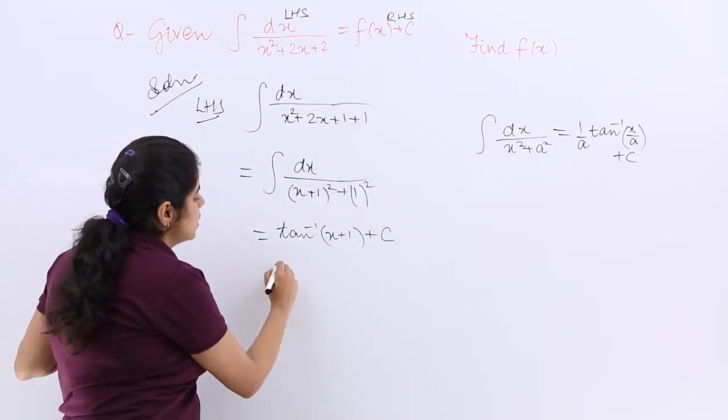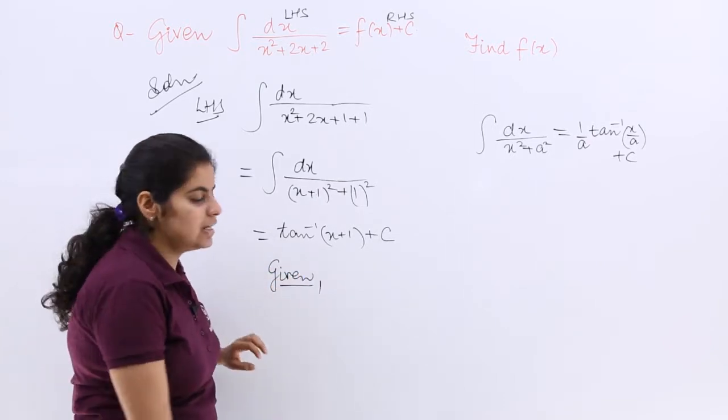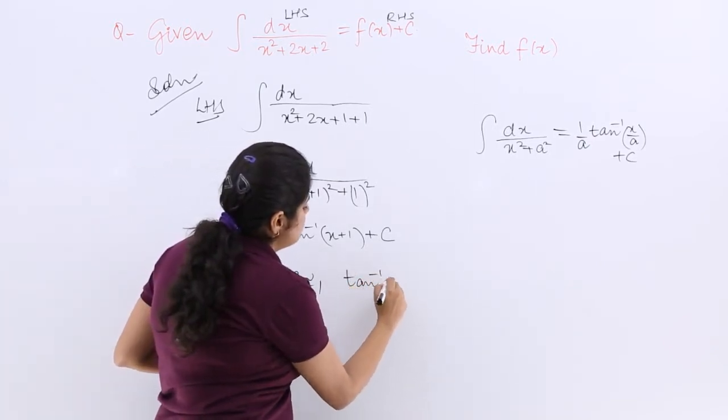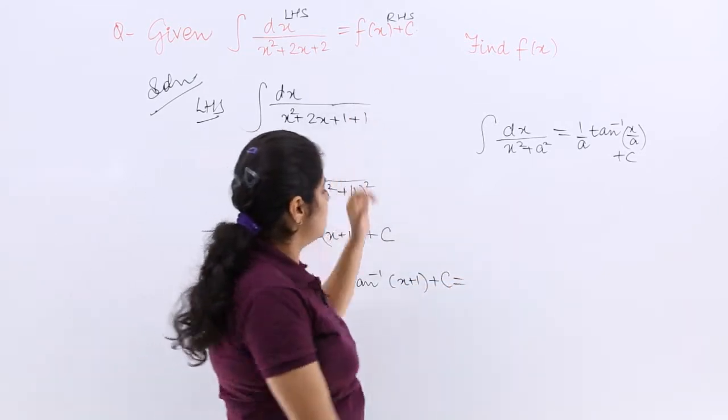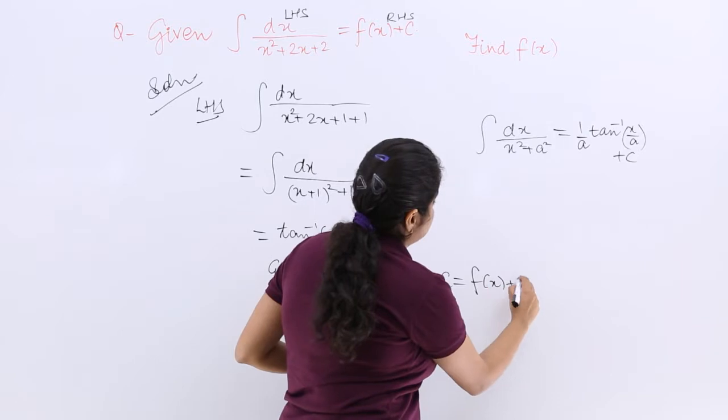This was your LHS, now given in the question is RHS. So given to you LHS is equal to RHS, that means tan inverse x plus 1 plus c is given to you as equal to fx plus c.